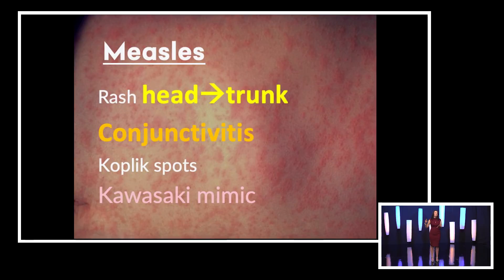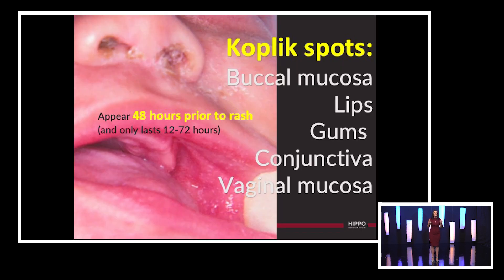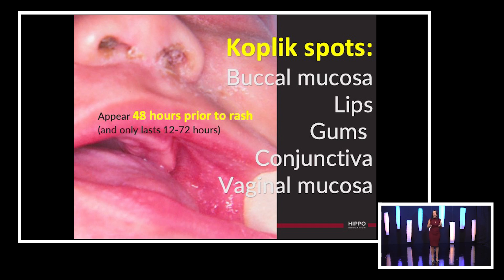We may see the classic presentation of measles, which is an important public health diagnosis. The rash starts on the scalp and forehead and then goes down. They have conjunctivitis that can look like Kawasaki's. When you have a rash, look inside the mouth as well — an enanthem can help confirm the diagnosis. In measles, you may or may not see Koplik spots because sometimes they resolve before the patient even presents to the emergency department.